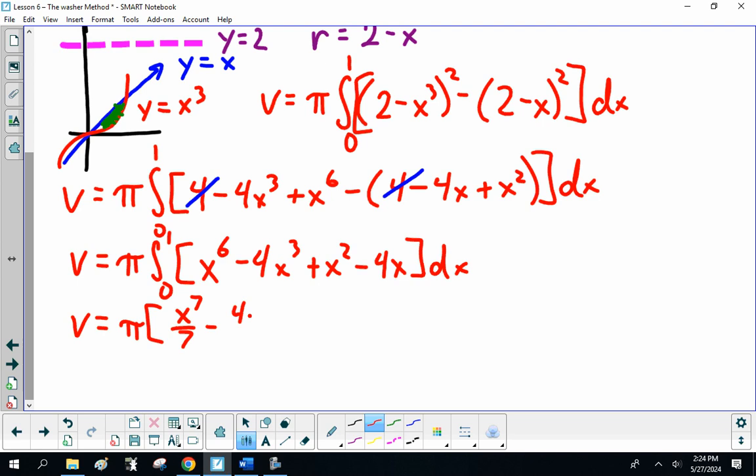That's going to be x⁷/7 - x⁴ + x³/3. Oops! dx got out. We just integrated it. So, it is from 0 to 1.